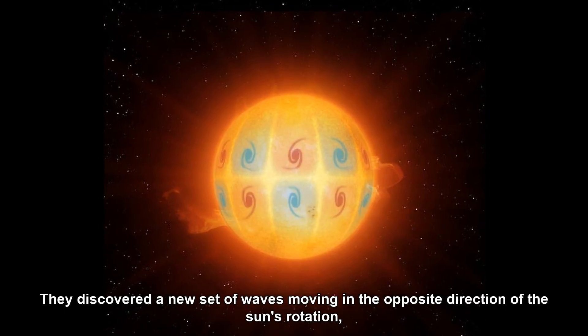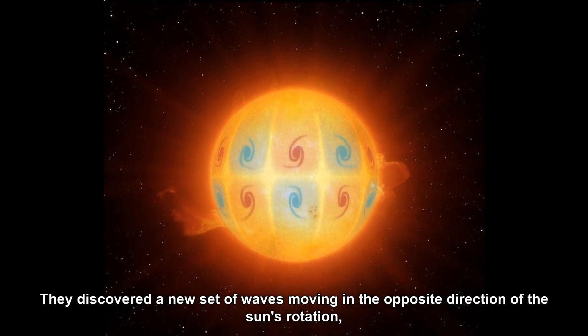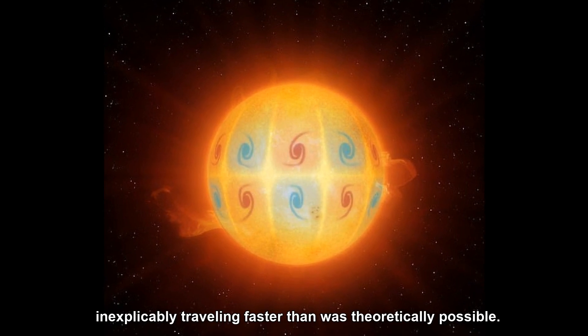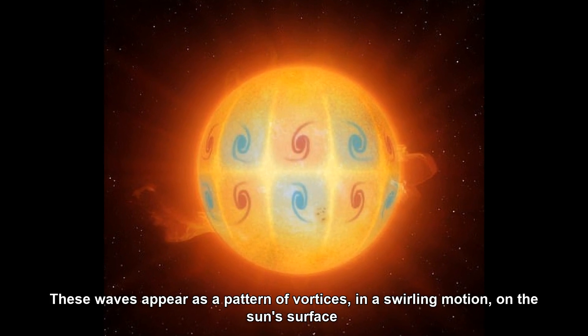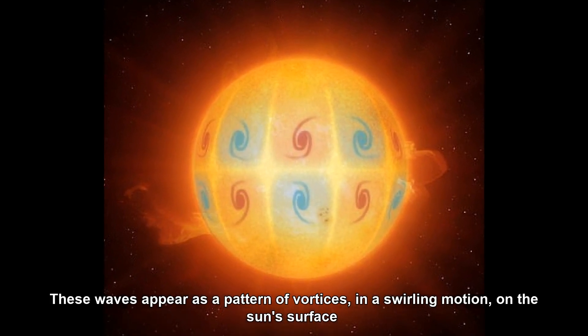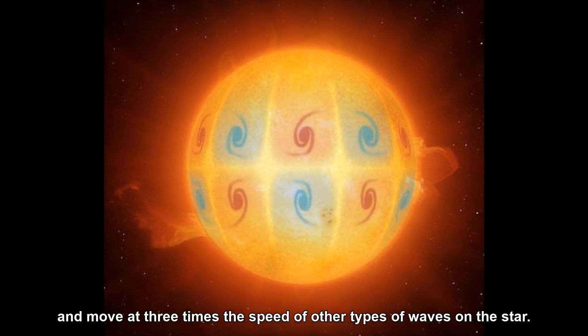They discovered a new set of waves moving in the opposite direction of the sun's rotation, inexplicably traveling faster than was theoretically possible. These waves appear as a pattern of vortices in a swirling motion on the sun's surface and move at three times the speed of other types of waves on the star.